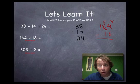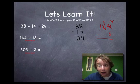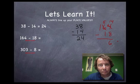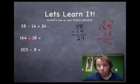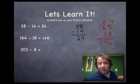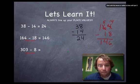So when you borrow: take one away from the digit to the left — 6 becomes 5 — and put a 1 in front of the borrowing digit — 4 becomes 14. What's 14 minus 8? That's 6. Then keep going: 5 minus 1 is 4, and 1 minus 0 is 1. So 164 minus 18 equals 146.